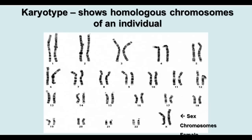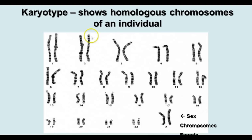A picture of the homologous chromosomes of an individual is called a karyotype. This shows the 22 pairs of chromosomes plus the sex chromosomes. This particular individual is female because there are two X chromosomes. The chromosomes are the same length and have a similar pattern of banding that shows the locations of different groups of genes.